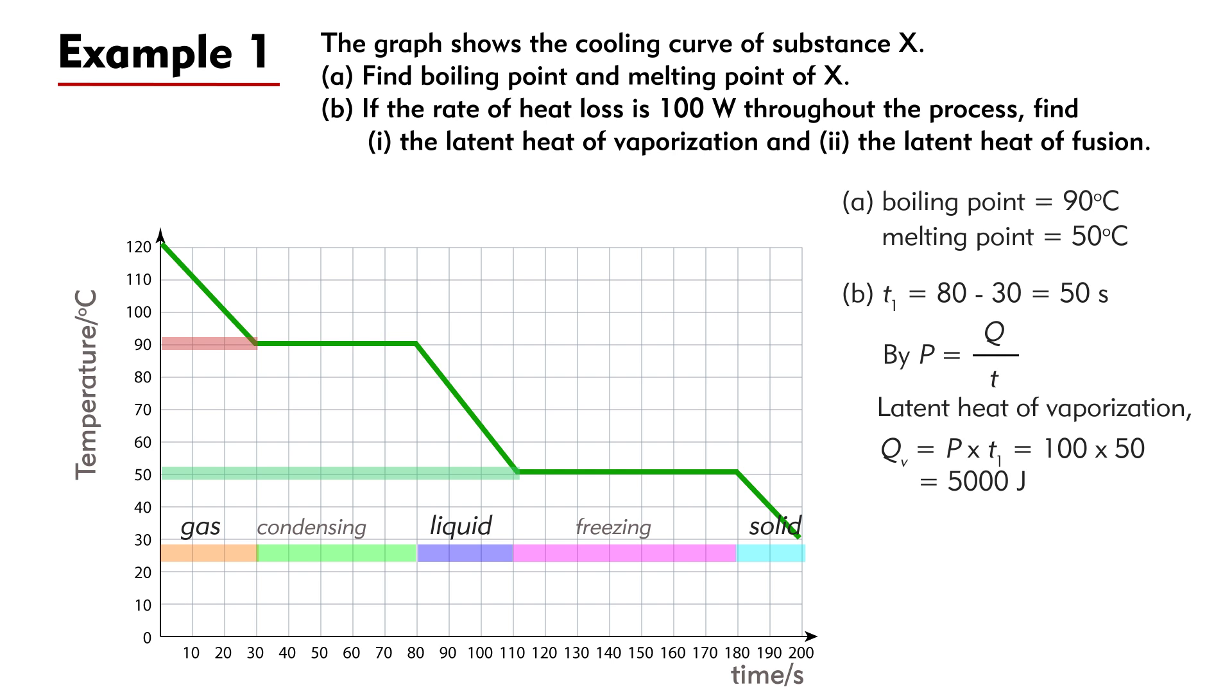Similarly, the time for freezing is T2 = 180 - 110 = 70 seconds. The latent heat of fusion of X is Qf = P × T2 = 100 × 70 = 7000 Joules.